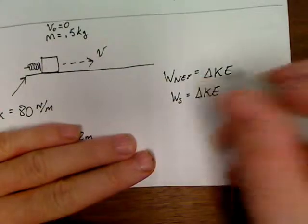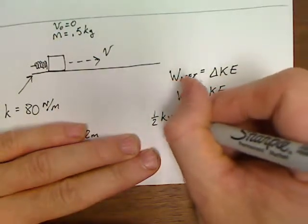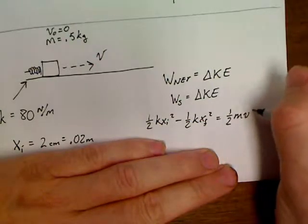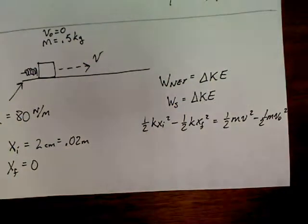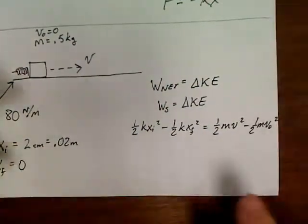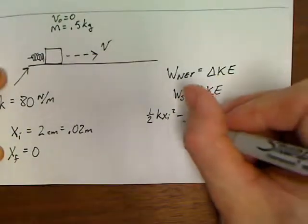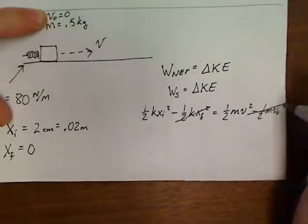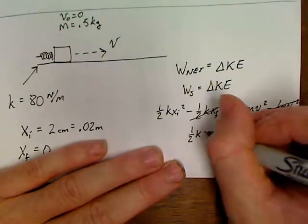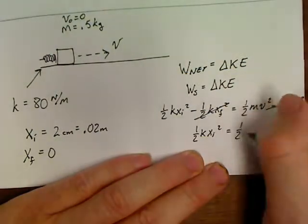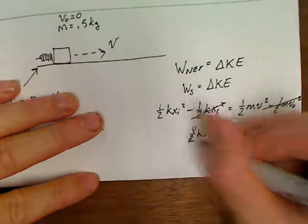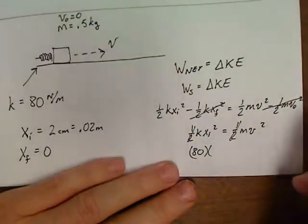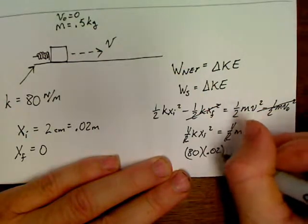So we can rewrite this equation as one-half kx_i² minus one-half kx_f² equals one-half mv² minus one-half mv₀². Now here's the thing: x_f is zero, so that cancels that term. The velocity initial of the object is zero, that cancels that. So all we're left with is one-half kx_i² equals one-half mv². This is awesome, the one-halves even cancel.